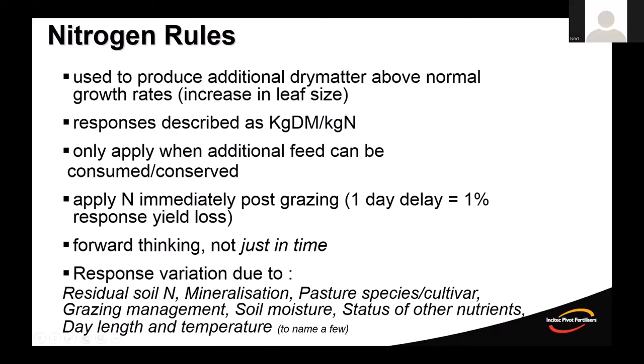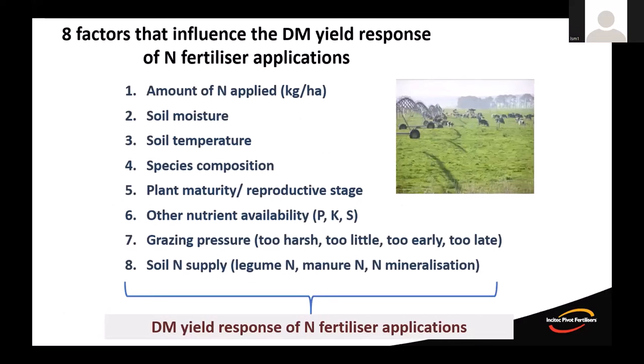In spring, ryegrass leaf emergence might be six or seven days, so canopy closure at two leaf means a 15–20 day rotation. In mid-winter, leaf emergence might be 15 days, meaning roughly a 60-day rotation to allow nitrogen to show its full potential. Response variability depends on mineral soil nitrogen, mineralisation, pasture species and cultivars, grazing management, soil moisture, other nutrient status, day temperature and length — and many other factors in combination.